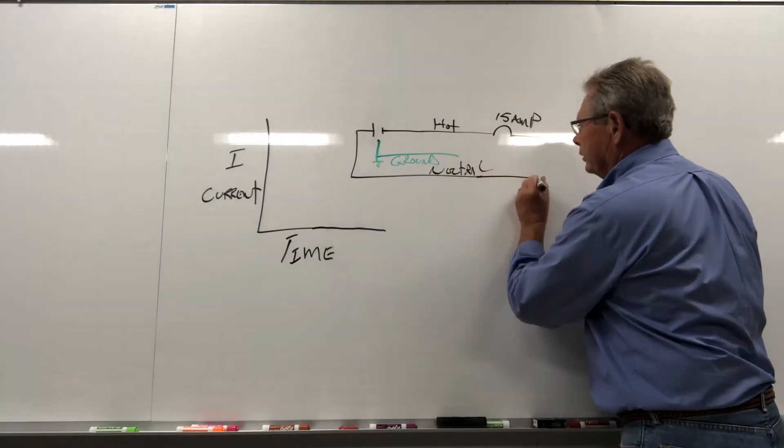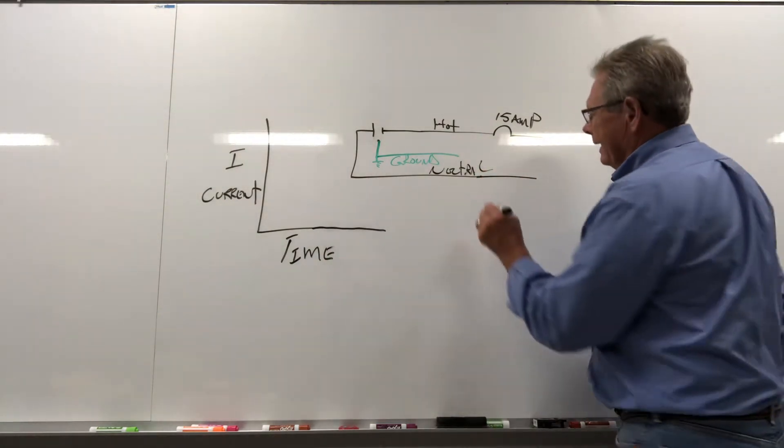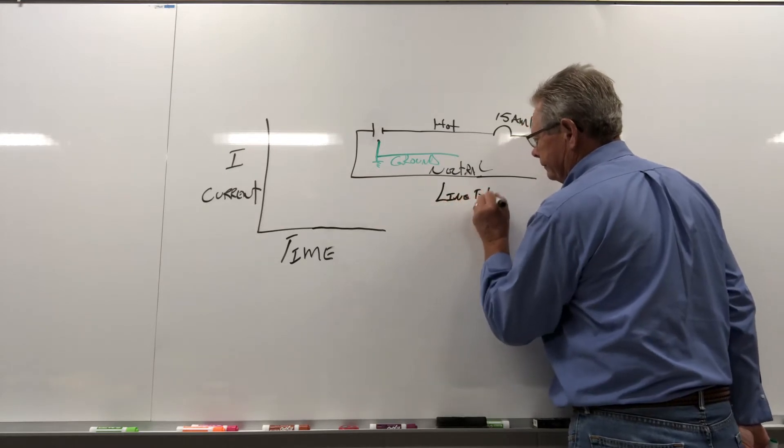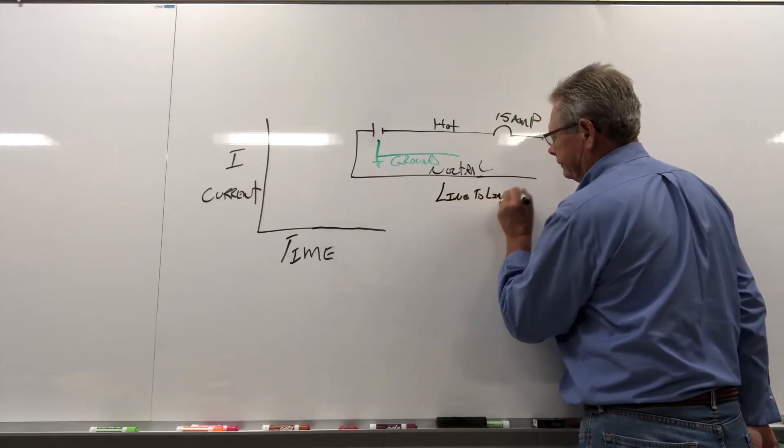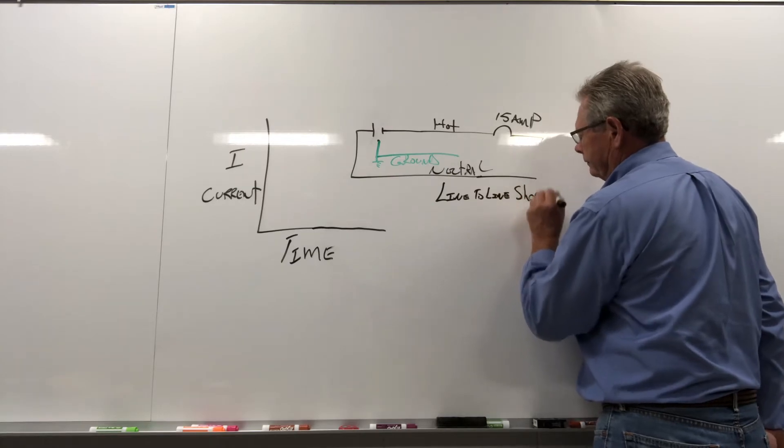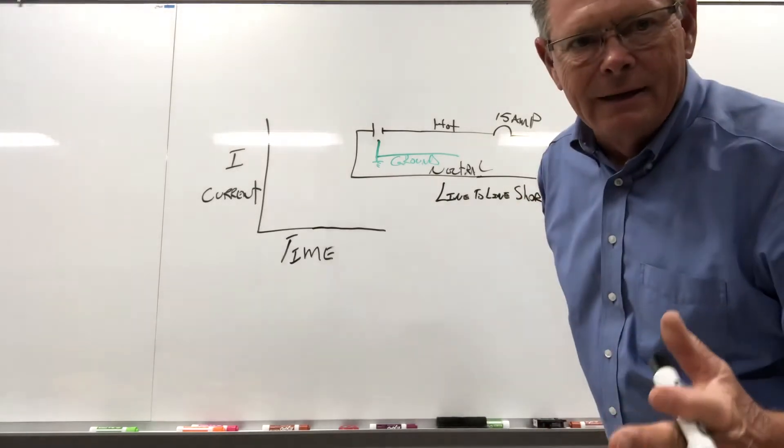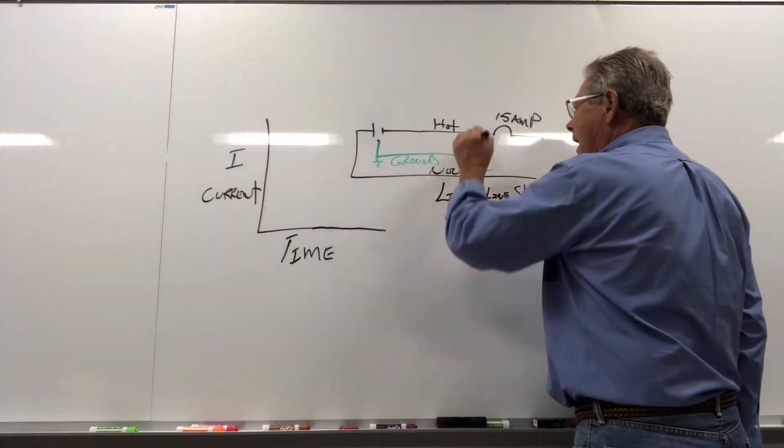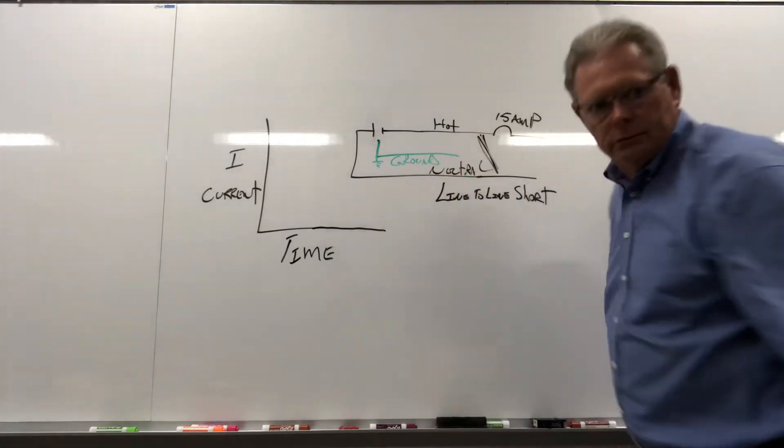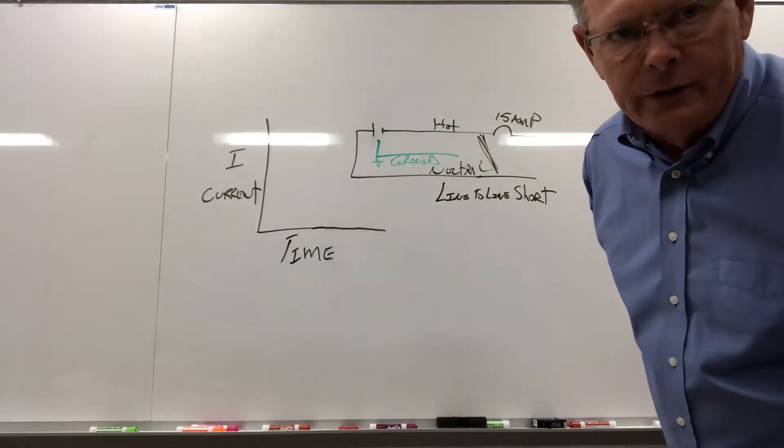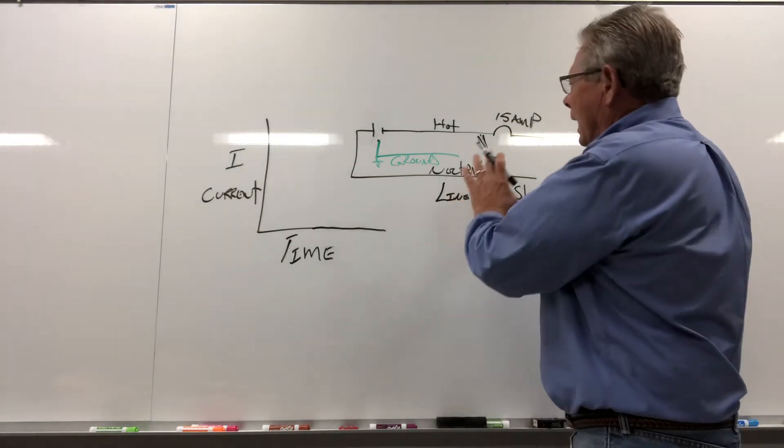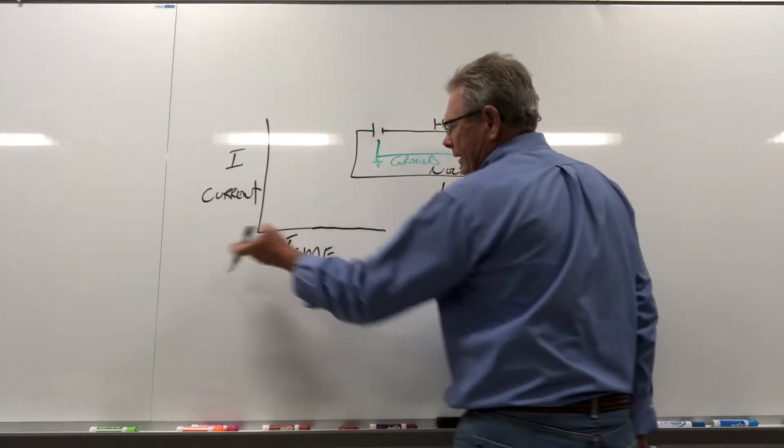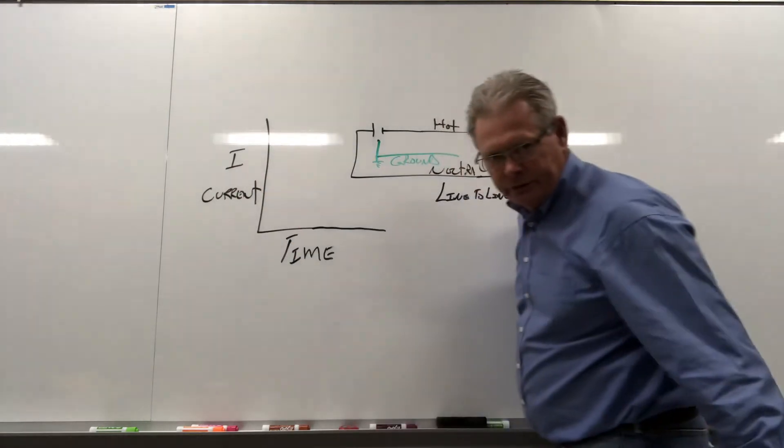Now, the first condition we're going to talk about is a line-to-line short. So on a line-to-line short, we're talking about a short between hot and neutral. Right there, between hot and neutral. As soon as that shorts out, this here's time, this here's current magnitude.